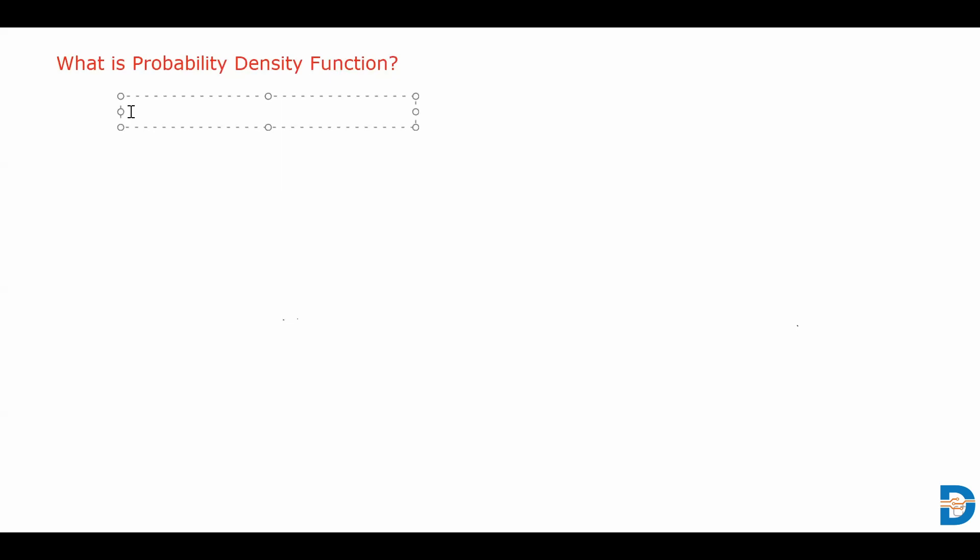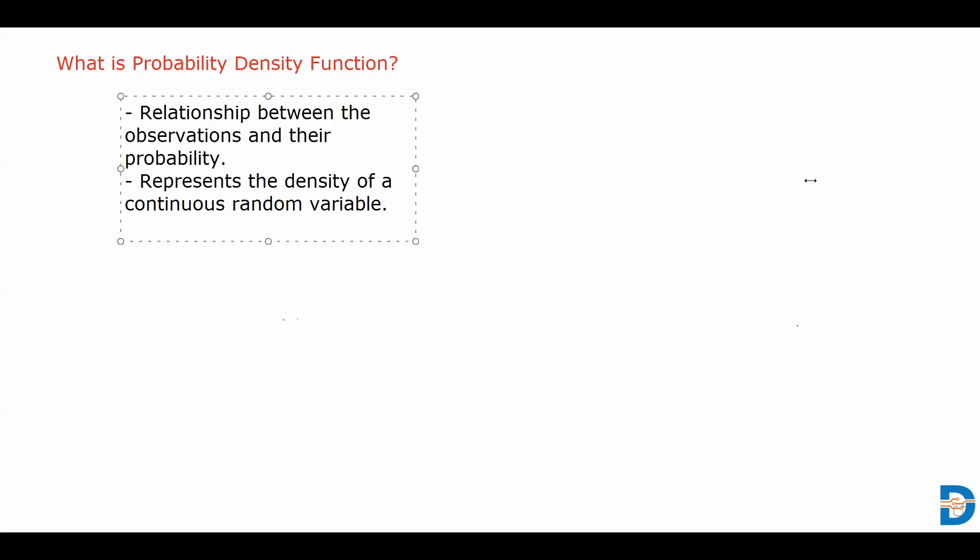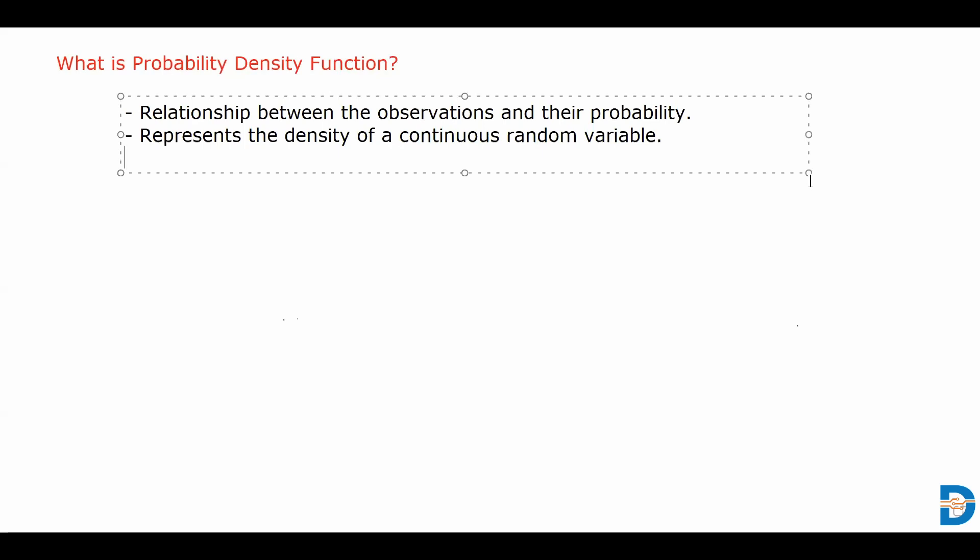Hello everyone, welcome to my video. In today's video we will see what is probability density function, which is also called as PDF in short. I hope you must have come across this term many times. It is a function that defines the relationship between a continuous variable and its probability. It also represents the density of a continuous random variable lying between a specific range of values.